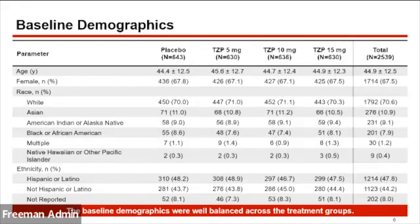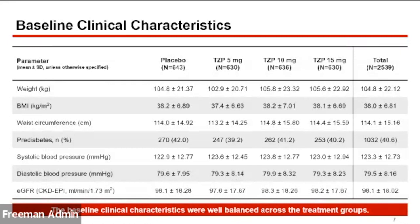In terms of baseline demographics, the average age was 44.9 years. Women comprised 67.5% of the study population. In terms of race, it was 70% white and Black or African American was 7.9%. In terms of ethnicity, 47.8% were Hispanic or Latino. The baseline body weight was 104 kilograms, BMI was 38, and just over 40% of participants had prediabetes, defined by ADA criteria with OGTTs performed.